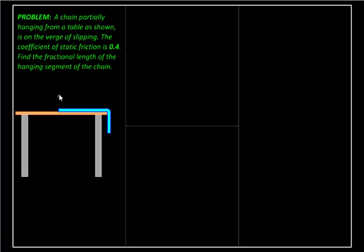We have a problem about a chain lying on a table with part of it hanging down. The chain is partially hanging from a table and is on the verge of slipping — the hanging part is going to pull the chain down but it hasn't happened yet. The coefficient of static friction is given as 0.4, and we have to find the fractional length of the hanging segment of the chain — what fraction of the total length is hanging such that it is about to start slipping.